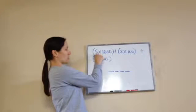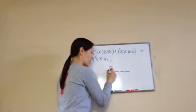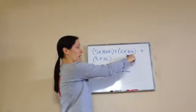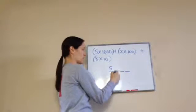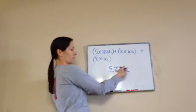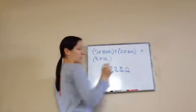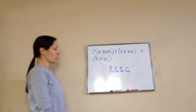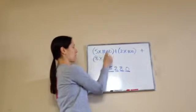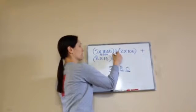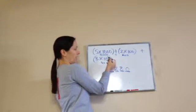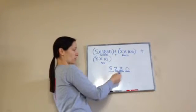What is in my thousands place? Five times a thousand, so I put 5 in the thousands spot. Then two is in the hundreds place. Plus eight is in the tens spot. There is no ones digit, so that's a zero. The answer is five thousand two hundred eighty. To check: 5 × 1,000 = 5,000, plus 2 × 100 = 200, plus 8 × 10 = 80. Five thousand plus two hundred plus eighty equals 5,280.